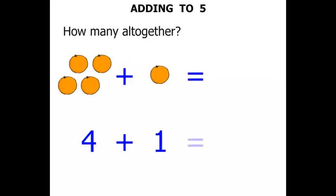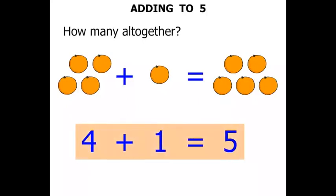Equals... well, let's put the 4 down and the 1. How much altogether once we add them together? 1, 2, 3, 4, 5. We get 5 as our answer.